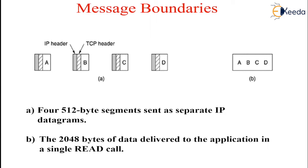Another feature of TCP service worth mentioning is urgent data. The sending application puts some control information in the data stream and gives it to TCP along with an urgent flag. This causes TCP to stop accumulating data and transmit everything it has for that connection immediately. When the urgent data arrives at the destination, the receiving application is interrupted so it can stop whatever it was doing and read the data stream to find the urgent data. The end of the urgent data is marked so the application knows when it is over.